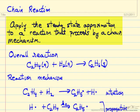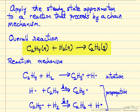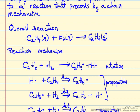In this video, we're going to apply the steady state approximation to a reaction sequence that proceeds through a chain mechanism. The overall gas phase reaction is ethylene reacting with hydrogen to make ethane. The way this reaction proceeds is there's an initiation step to form these active intermediates, which are much more reactive and will be present in low concentrations.